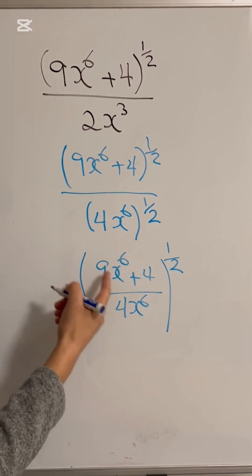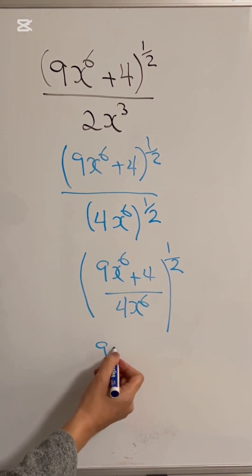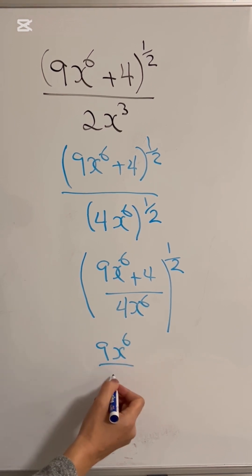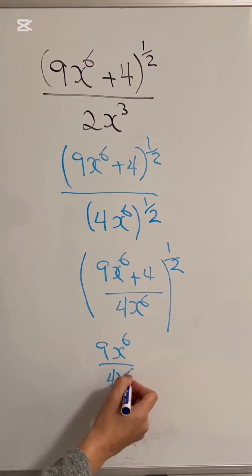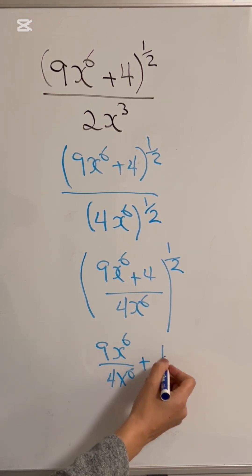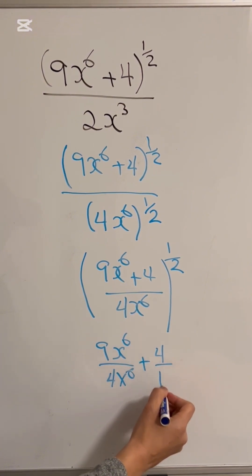And believe it or not, now you could change that to 9x to the 6 over 4x to the 6 plus 4 over 4x to the 6.